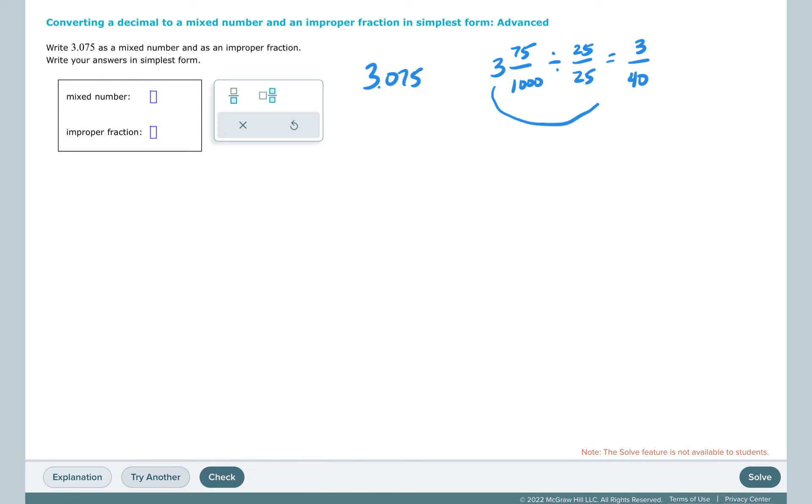I'm going to move my whole number back in front of my new fraction, and my mixed number is 3 and 3 over 40. To change this to an improper fraction, I'm going to multiply the whole number here by the denominator, so 3 times 40 is 120, and I'm going to add back in my part right here. So I have 120 plus 3 is 123, and my denominator is 40, so 123 over 40.